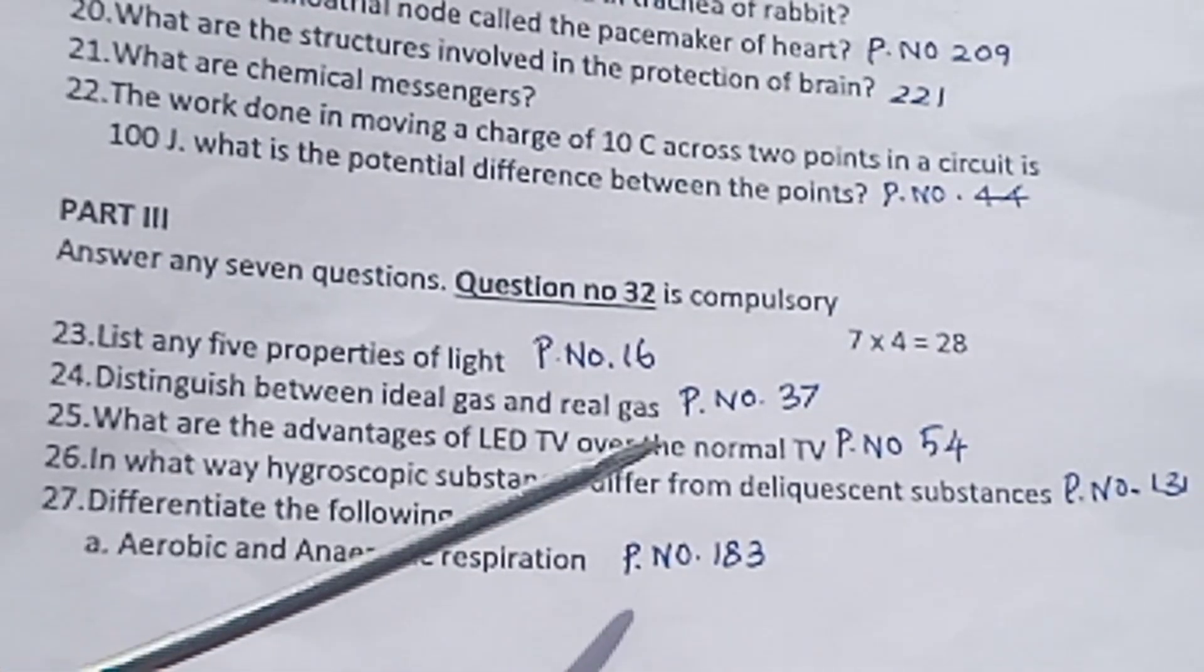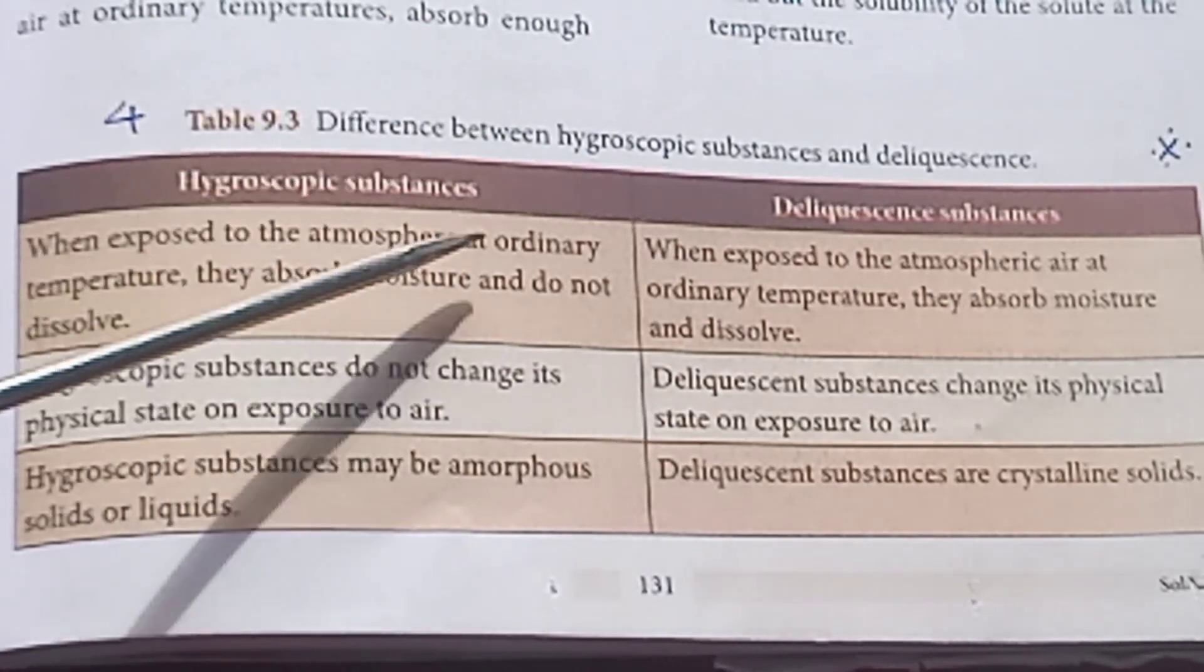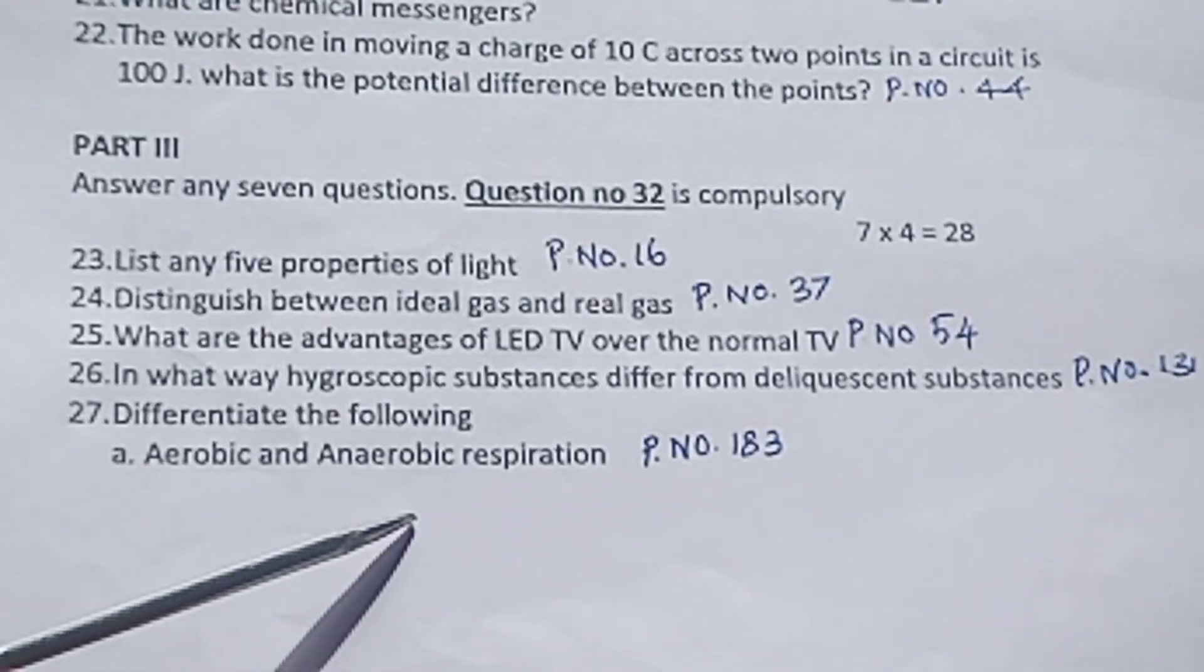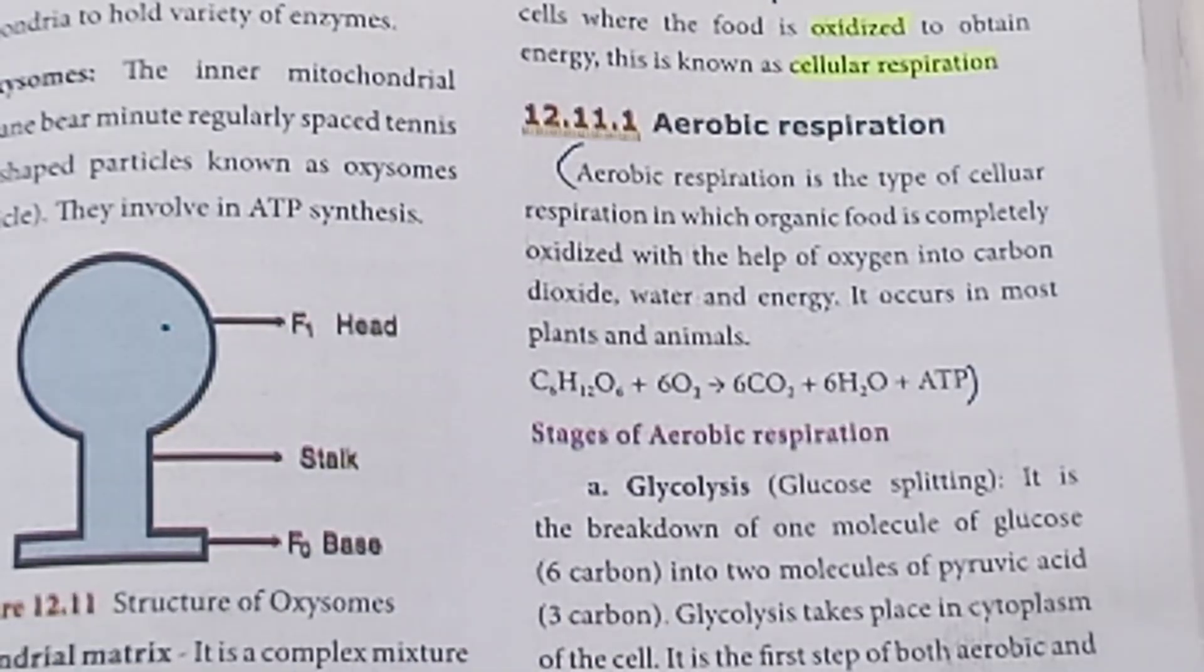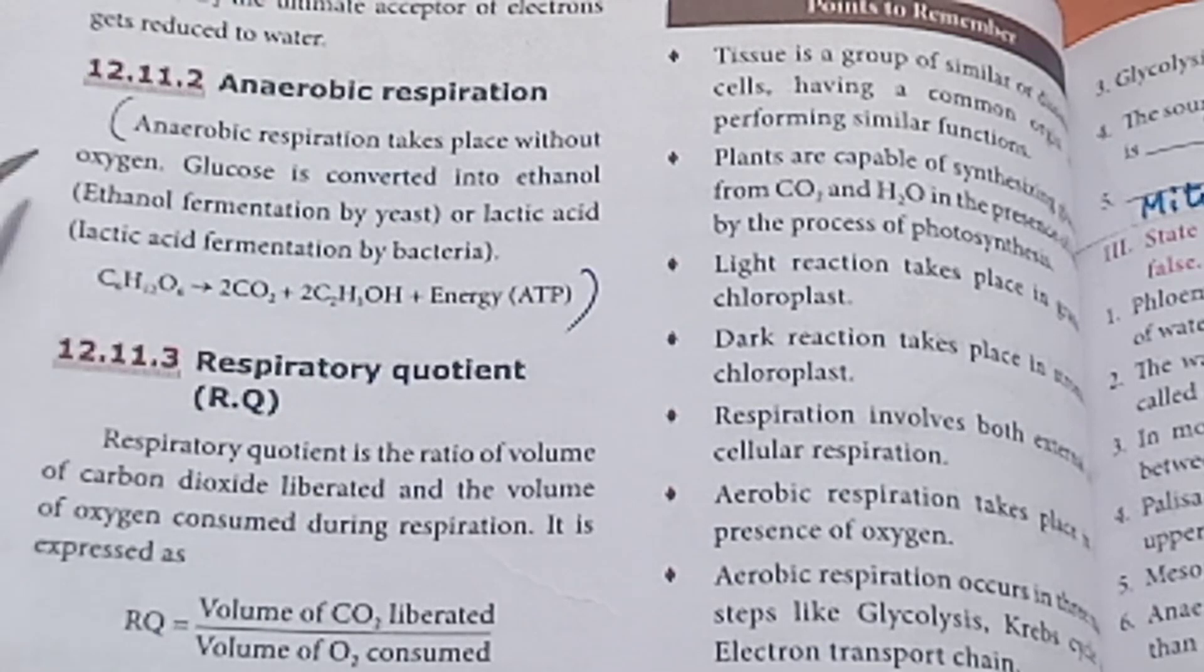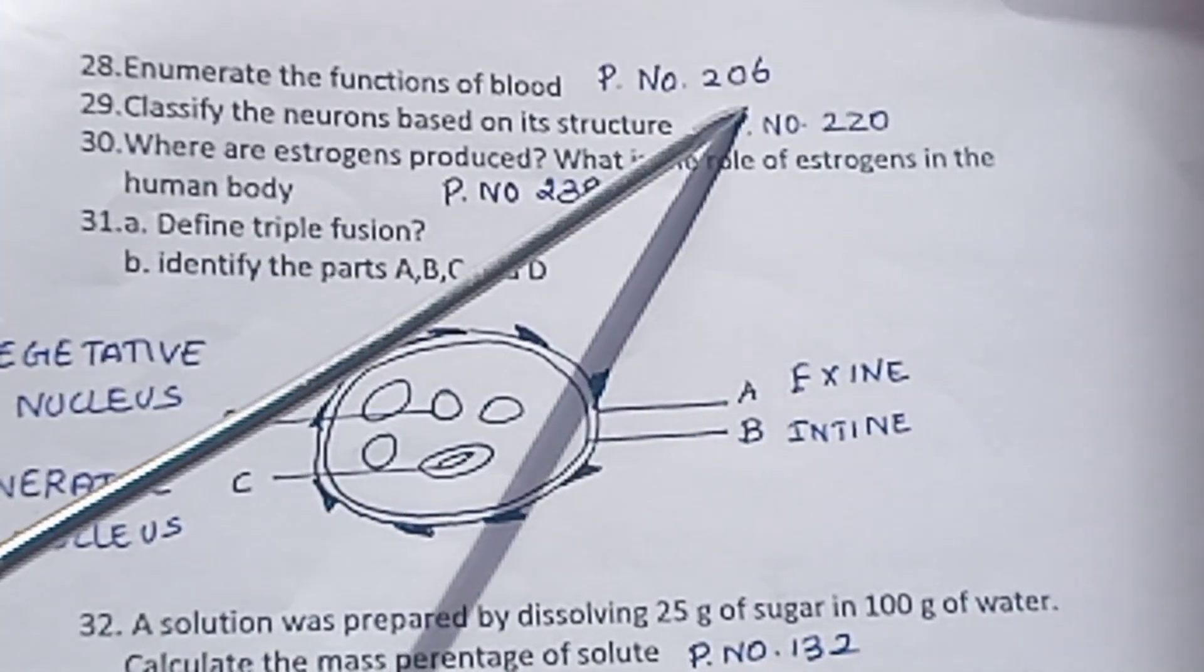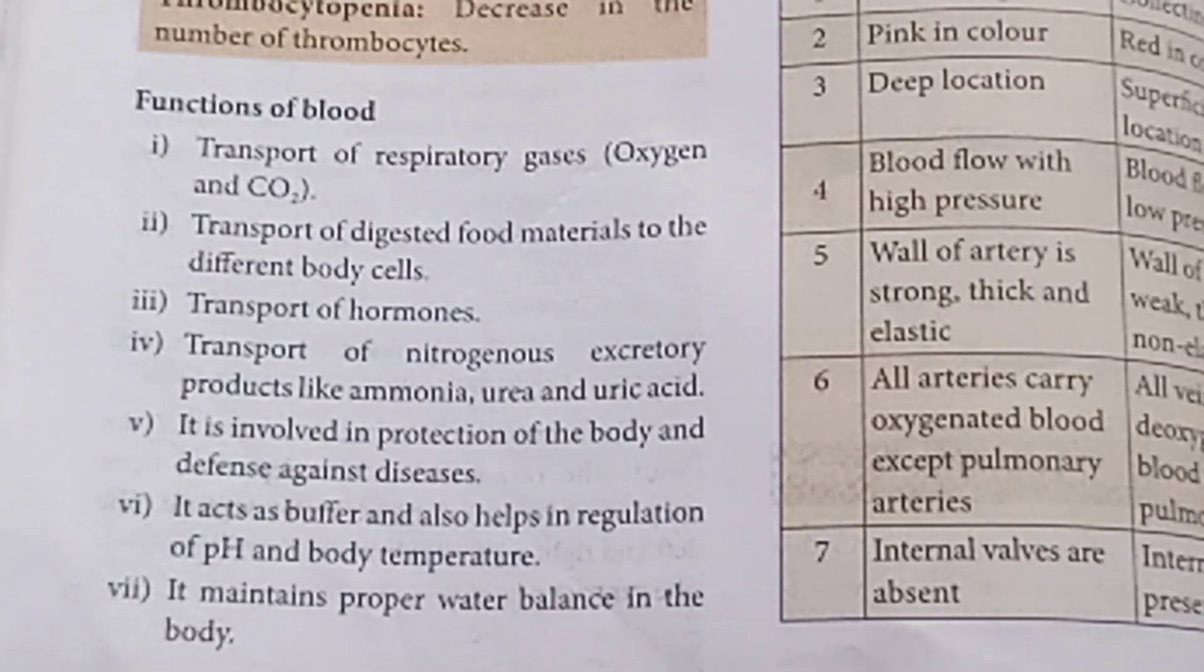Question 26: In what way hygroscopic substance differ from deliquescent substance? Page number 131. Differences between hygroscopic substance and deliquescent substance. Important 4 mark question. Question 27: Differentiate aerobic and anaerobic respiration. Page number 183. May 2022 public exam question. Aerobic respiration produces ATP. Page 184 for anaerobic respiration. Tabulation formula differences. Question 28: Enumerate the functions of blood. Page number 206. The 7 points. Very important May 2022 question.